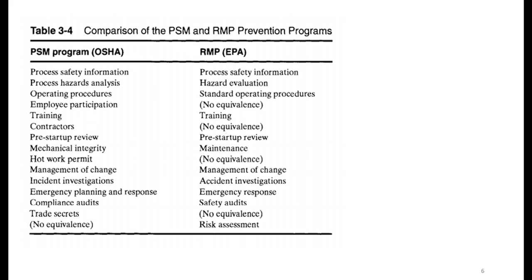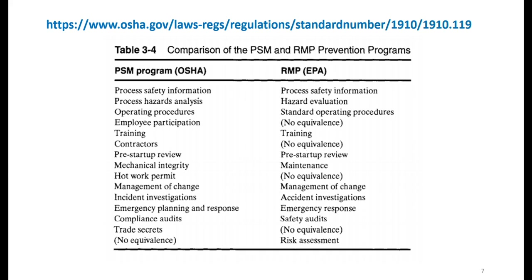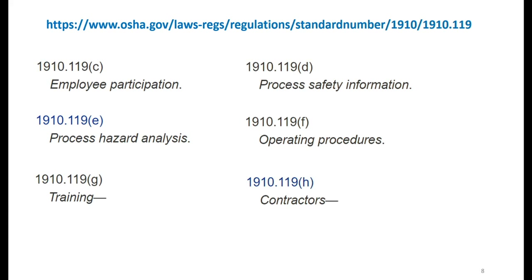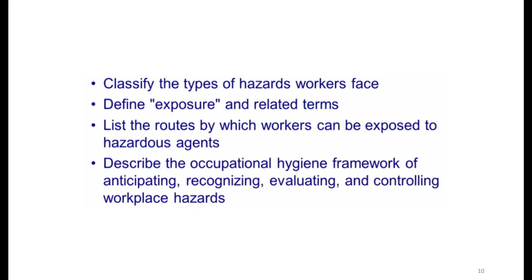The RMP program has equivalent elements: process safety information becomes hazard evaluation; operating procedures remain similar; employee participation has no RMP equivalent; training corresponds to training; mechanical integrity becomes maintenance; management of change, accident investigation, emergency response, and safety audit (instead of compliance audit) are the RMP equivalents. You can find detailed information at OSHA.gov under standard 1910.119.